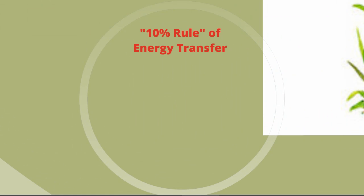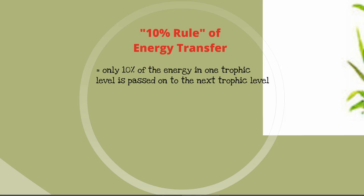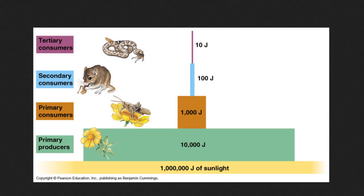When we look at a food web, we need to keep in mind something called the 10% rule of energy transfer. What that says is that only 10% of the energy in any one trophic level is passed on to the next trophic level. Here's an illustration of the 10% rule.